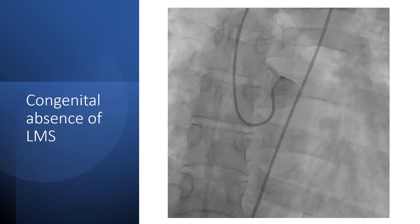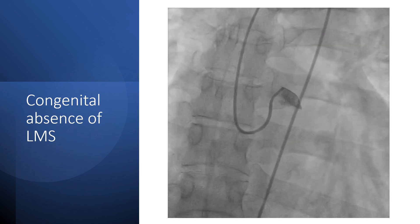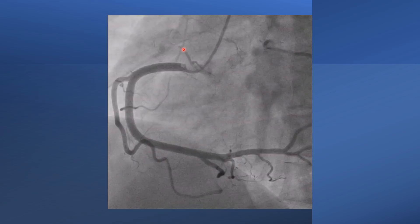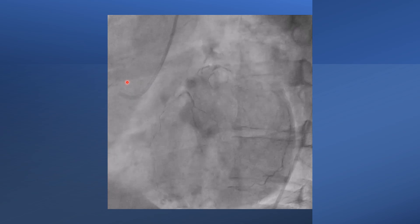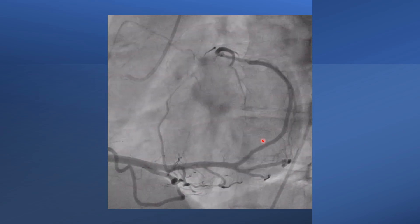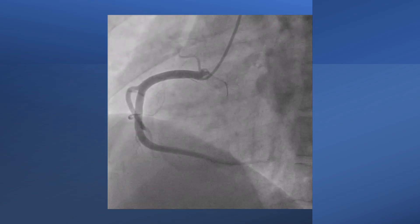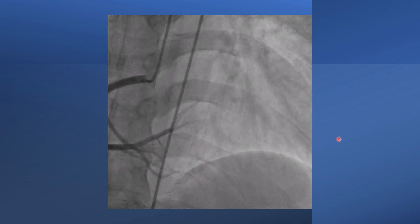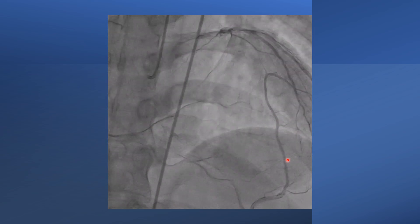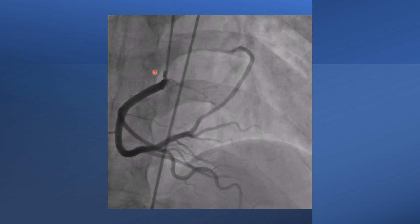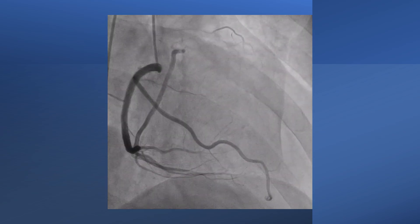This is the case of congenital absence of the left main stem. We can see a single artery that gives rise to the RCA, and the RCA continues as the circumflex and as the LAD. In the apicranial view of the same case, you can see the circumflex and the LAD all arising from a single artery.